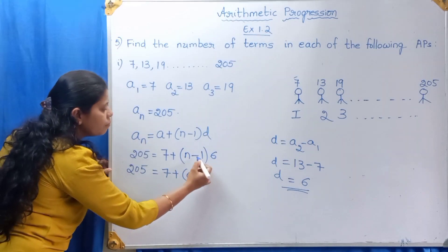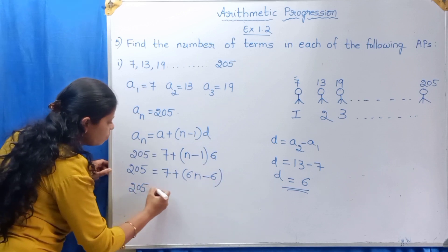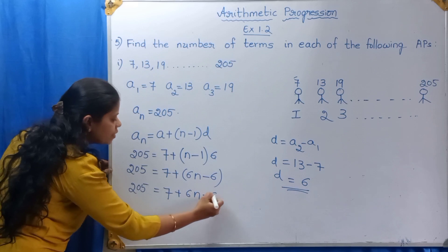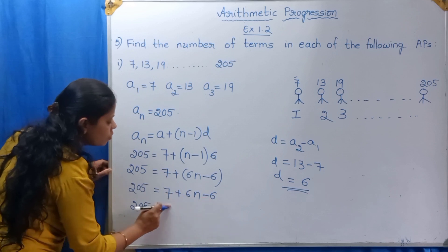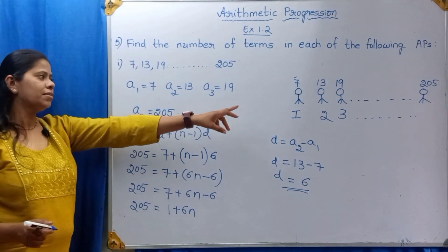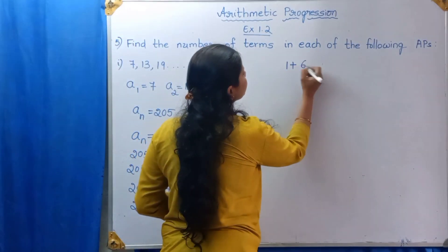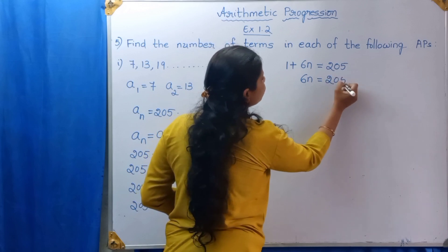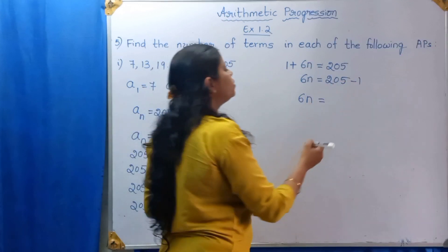Expanding: 6 into N is 6N, and 6 into 1 is 6. So 205 is equal to 7 plus 6N minus 6. That gives us 205 is equal to 1 plus 6N, since 7 minus 6 is 1. Then 1 plus 6N is equal to 205. Therefore, 6N is equal to 205 minus 1, which is 204.